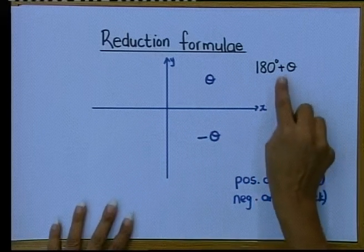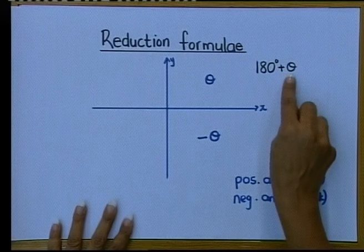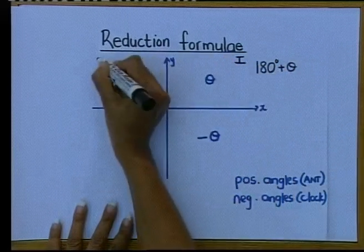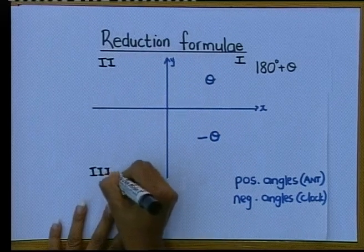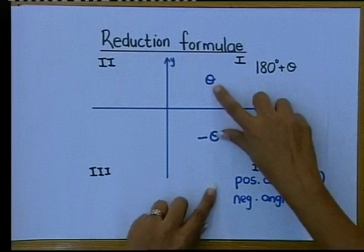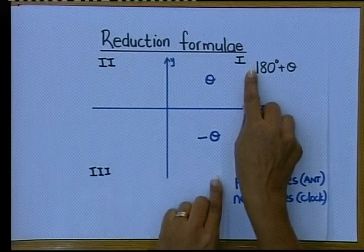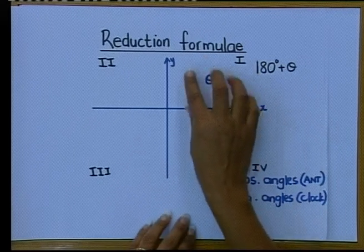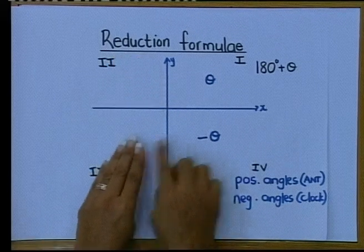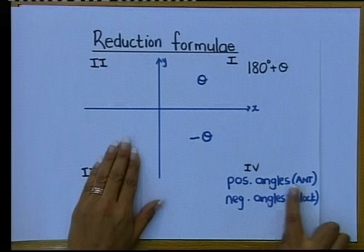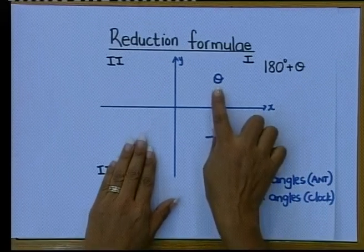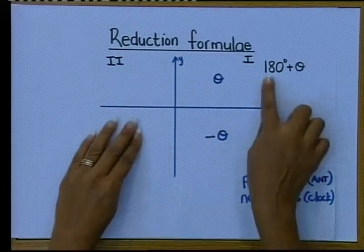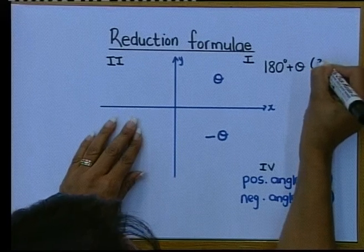Just two minutes. First of all, go to your angle. Where is positive theta? Positive theta is in the first quadrant — that's where it starts. Now, 180 degrees plus theta: it's a positive angle, so you are going to move two blocks anticlockwise. Positive angles go anticlockwise. I started at theta, I have plus 180, so I go plus 90, plus 180. So 180 plus theta is in the third quadrant.